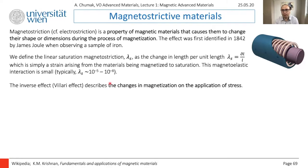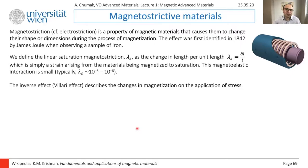The reason for this is magnetostriction. We have current at 50 Hz, and when the transformer works, the alternating current continuously changes the magnetization. Due to magnetostriction, this slightly changes the size of the element, creating noise in the 50 Hz range, which we hear as a low hum. This is magnetostriction.